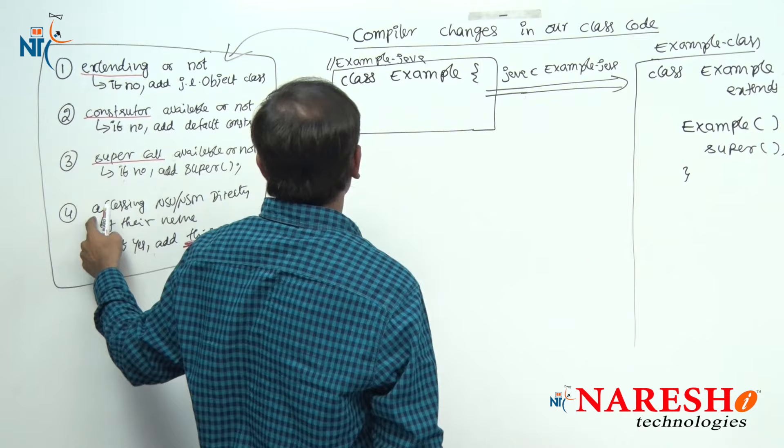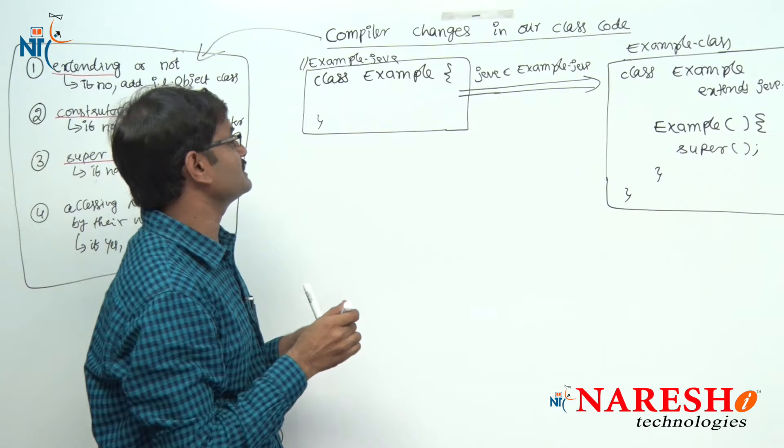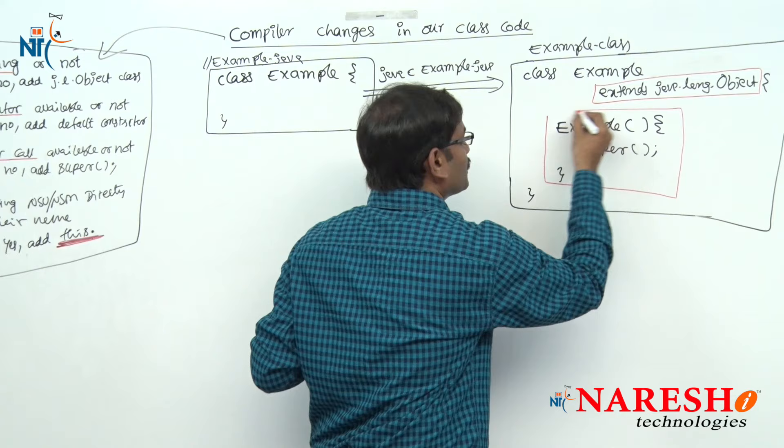Fourth point: it is checking if any members are being accessed. No members accessing. Close this class. So the changes are: change number one — it is placing java.lang.Object class as super class; and next, it is placing a constructor along with super(). You should have this idea to pass a written test exam.